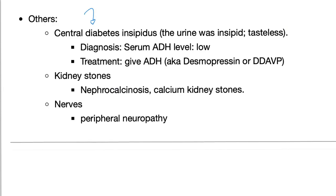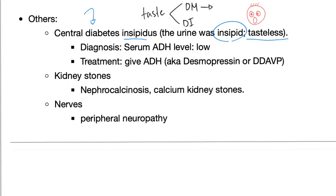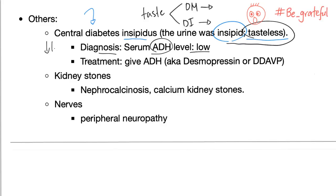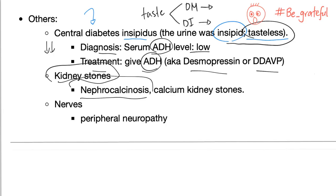You can find central diabetes insipidus — called insipidus because the urine is insipid, meaning tasteless, because it is very diluted. Back in the old days, doctors used to taste urine to differentiate diabetes mellitus (sweet urine) from diabetes insipidus (insipid urine). In central DI, serum ADH is low — decreased secretion. Treatment is desmopressin (DDAVP). Kidney stones can happen — called nephrocalcinosis; these are calcium kidney stones. You can also have peripheral neuropathy, leading to tingling, numbness, dull aching pain in the hands.